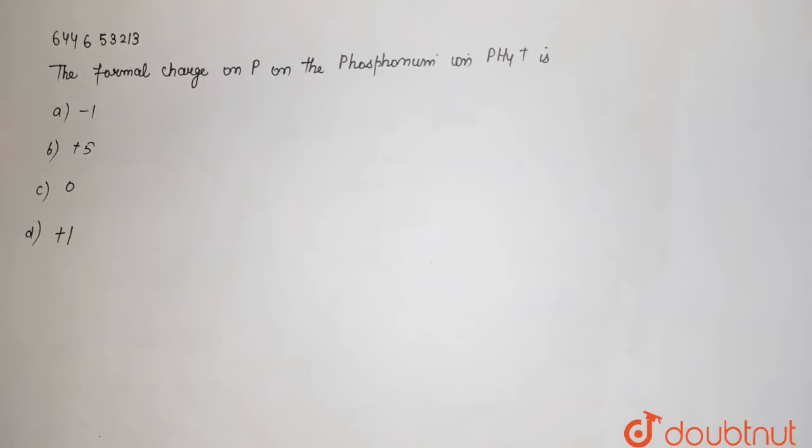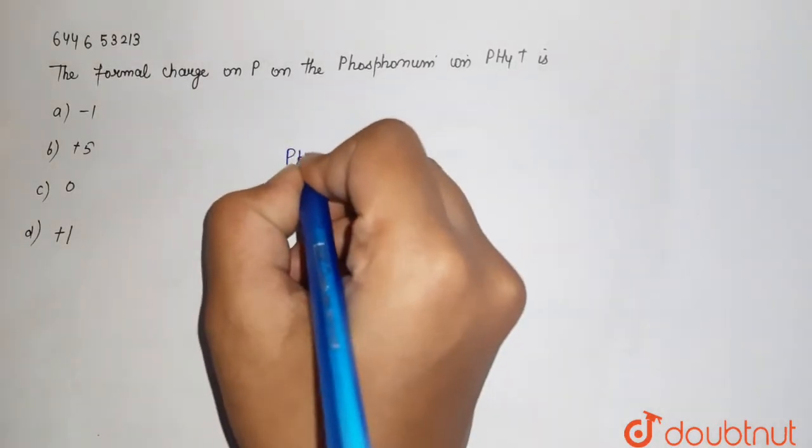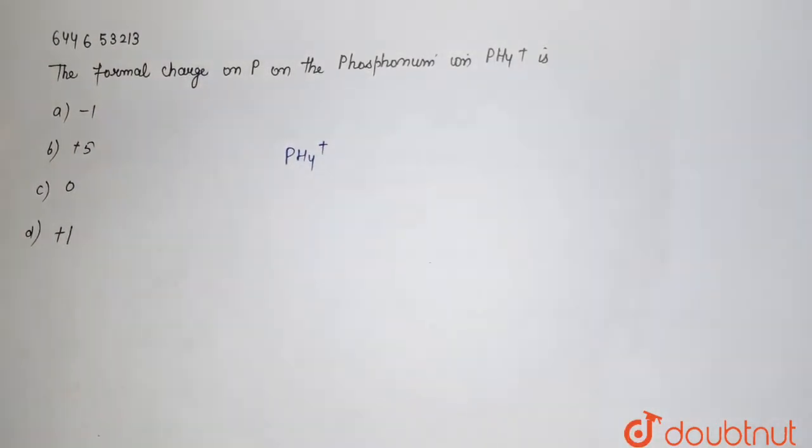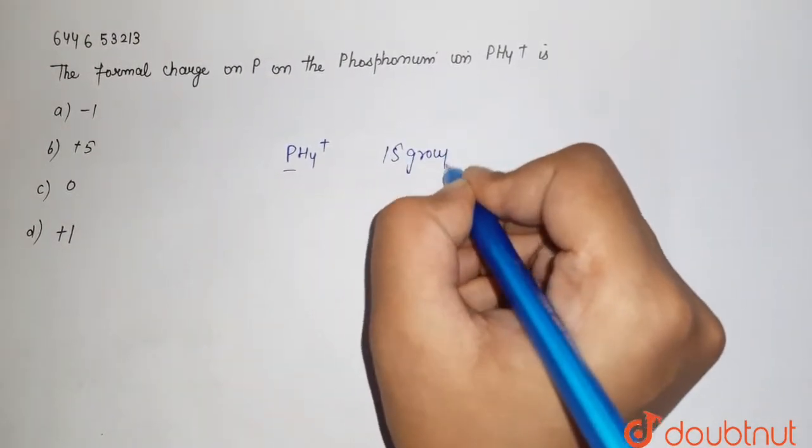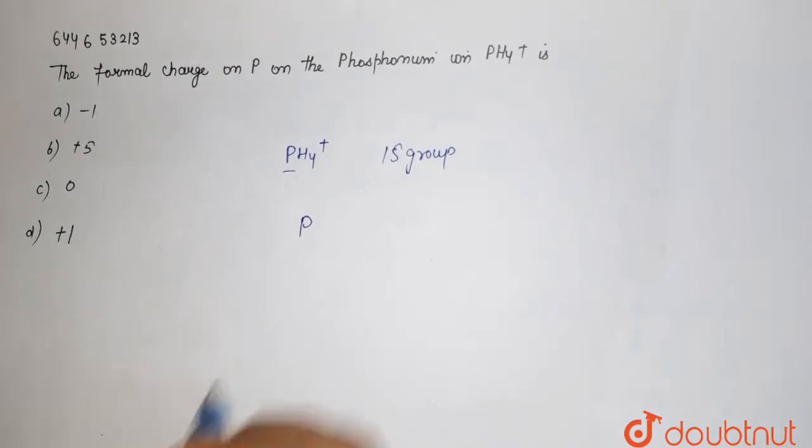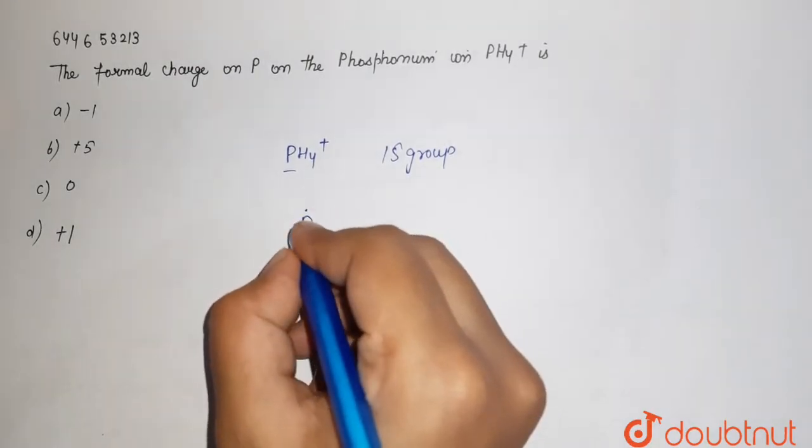So this PH4 positive is your phosphonium ion. Phosphorus belongs to group 15, that is the nitrogen family. It has 5 valence electrons - 1, 2, 3, 4, and 5.